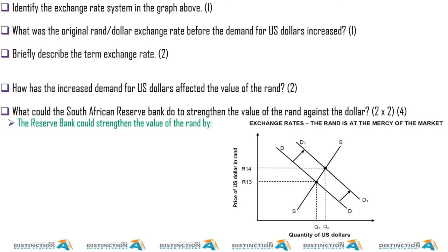Another one here — same scenario. We see a depreciation of the rand, which is a very common thing, and a shift of the demand curve. We have an increase in quantity demanded and supplied. Let's identify the exchange rate system: this one is a free floating exchange rate, just like we had before. What was the original rand-dollar exchange rate? That was 1 is to 13.